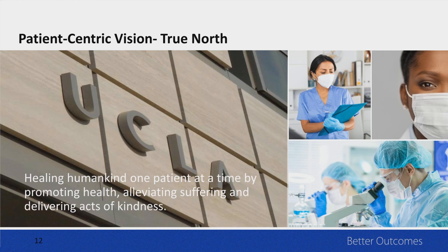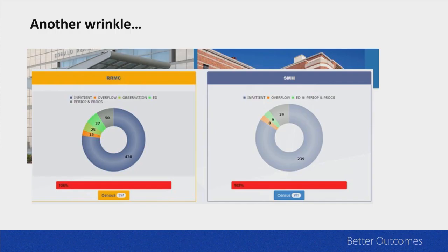Is it promoting health? Is it alleviating suffering? Is it delivering acts of kindness? And if it wasn't, we needed to figure out how we could make that happen. We already have really high patient satisfaction scores — in the 90th percentile for over a decade — while running at an extraordinarily high census. Running at 85% census is a solid place to be, but we were running at over 100% every Tuesday. This was going to be a very complex change, and we were not going to be able to close down any rooms or wings to make our monitor exchange. Things needed to happen extraordinarily smoothly so that we didn't impact our patient satisfaction scores.